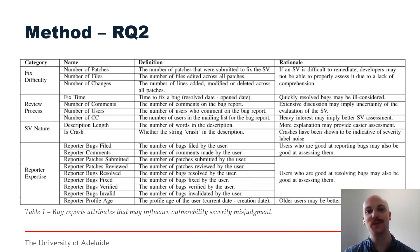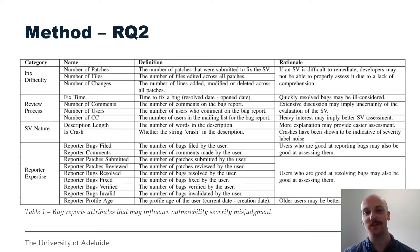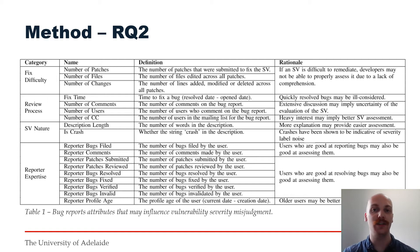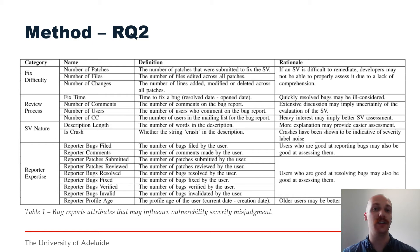For Research Question 2, to investigate the causes of inconsistency, we compared the severity rankings produced in Bugzilla reports to those of the Mozilla Security Advisory. We treated the Mozilla Advisory assessment as more correct, as it is conducted by a dedicated security team. Hence, discrepancy would imply initial severity misjudgment for the bug report. We investigated a variety of bug report attributes related to the fix difficulty, review process, vulnerability nature and reporter expertise to identify potential correlation to misjudgment. We identified correlation of these explanatory attributes to the severity misjudgment using a logistic regression model.